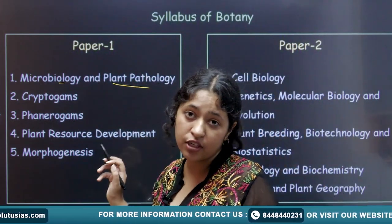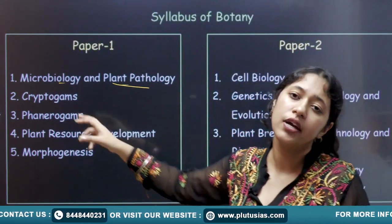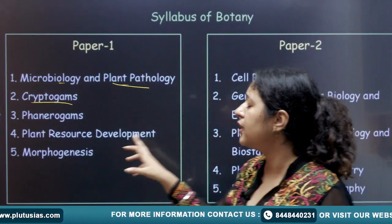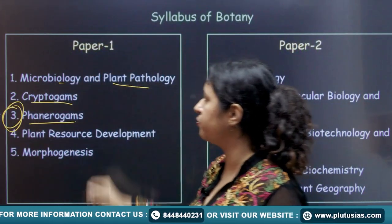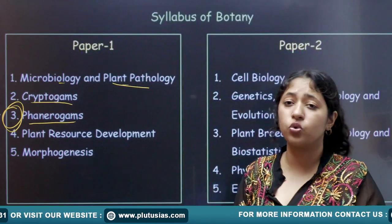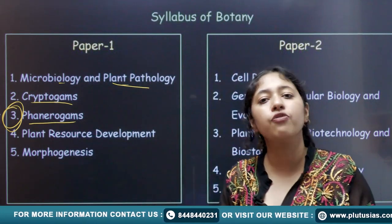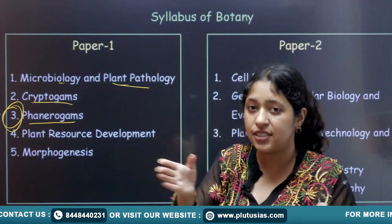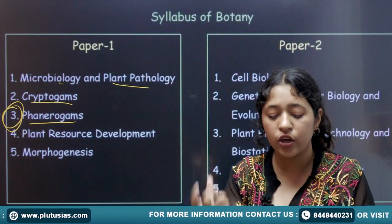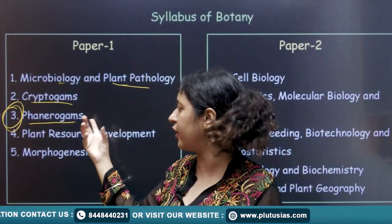The next unit is cryptogams, which is a very diverse unit because you will go down to the species level and discuss specific genera. This topic must be studied from an evolutionary point of view. The next unit is phanerogams, which is the most important unit of paper one. It is very vast and covers taxonomy, embryology, anatomy of angiosperms, and 20 families of angiosperms. The most important part is floral diagrams — you start with the morphological part and cover flower arrangement and everything in this topic.